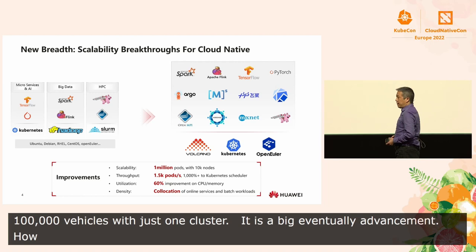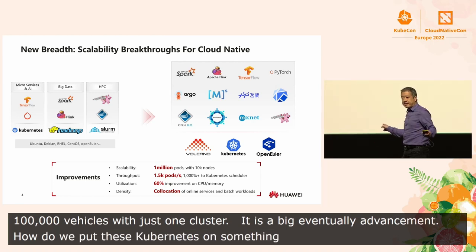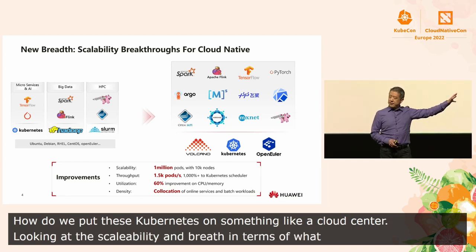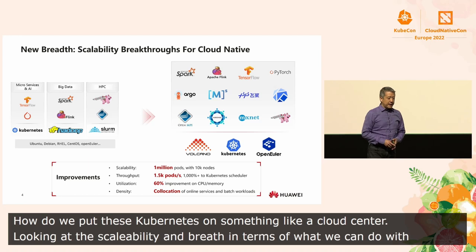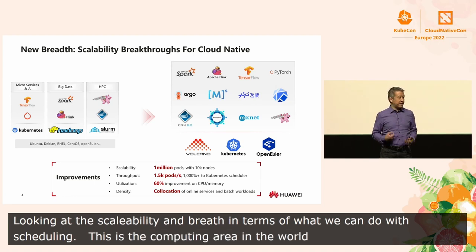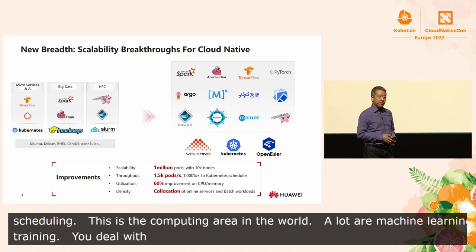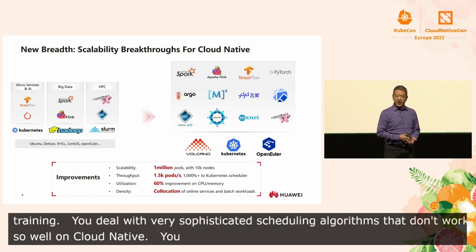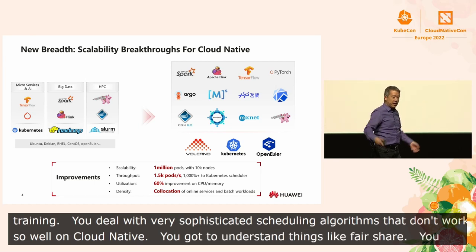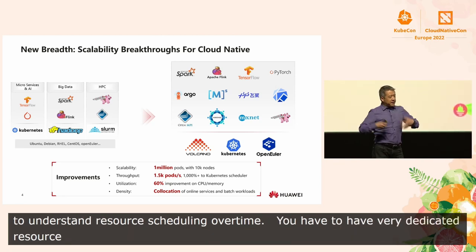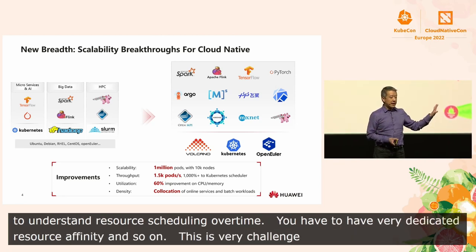Another area that we've been driving at the frontiers is looking at the scalability and breadth of what we can do with scheduling, and this really comes back to the distributed computing area. A lot of the big workloads running in cloud data centers today are around machine learning training. The problem is that you deal with very sophisticated scheduling algorithms that don't work so well in cloud native, because you've got to understand things like fair share, resource scheduling over time, very dedicated resource affinity, and so on. This is very challenging when you take a look at bringing that into cloud native.